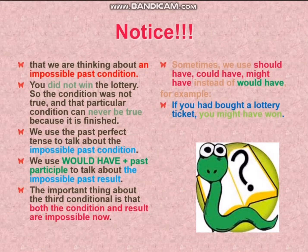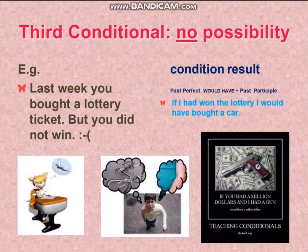Sometimes we can use should have, could have, or might have instead of would have. For example: if you had bought a lottery ticket, you might have won. Once again — no possibility. Third conditional, no possibility. For example: last week you bought a lottery ticket but you did not win. The condition and result is: if I had won the lottery, I would have bought a car. But you didn't.